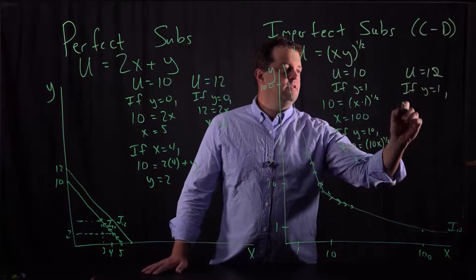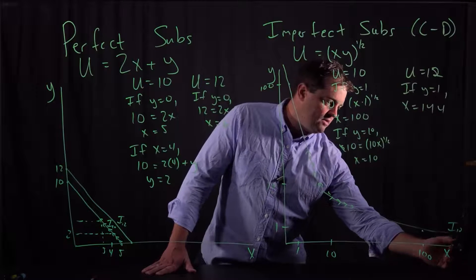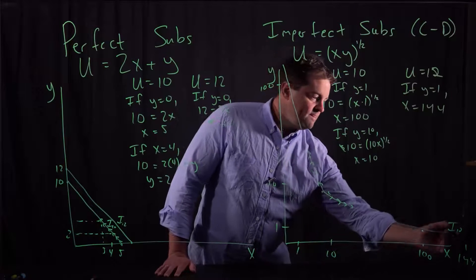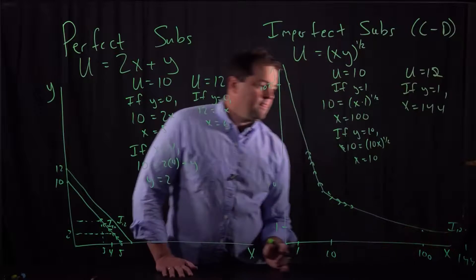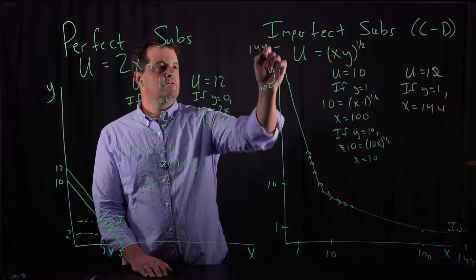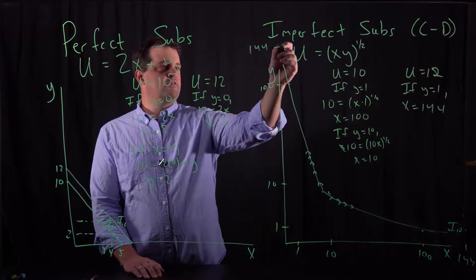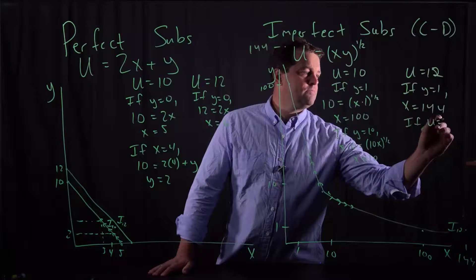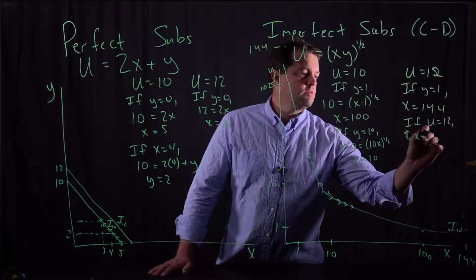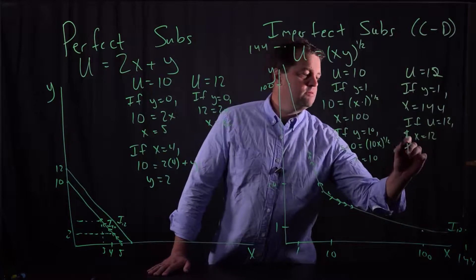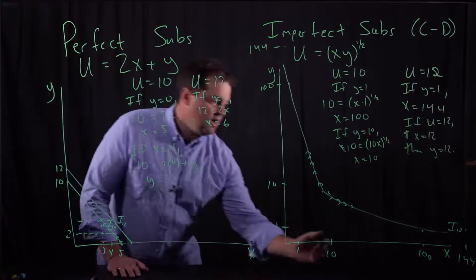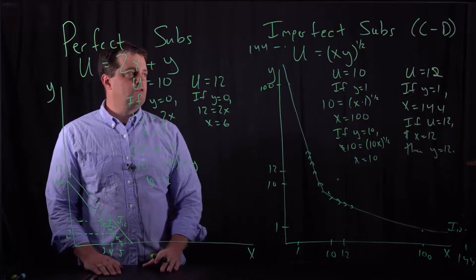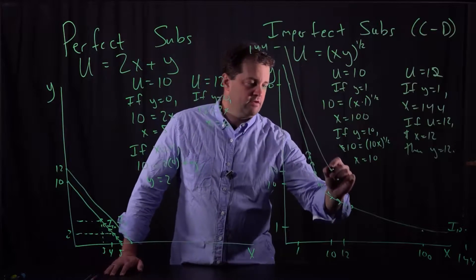If Y equals 1, then X is going to have to equal 144. So now I'm way out here on the indifference curve, this new indifference curve I've found. Similarly, I'd be way up here with one unit of X and 144 units of Y. And if I give this consumer 12 units of X, then Y is going to have to equal 12 as well. So I've found a different point on that second indifference curve. And I can connect those dots, curve through there.